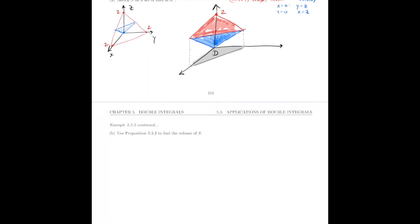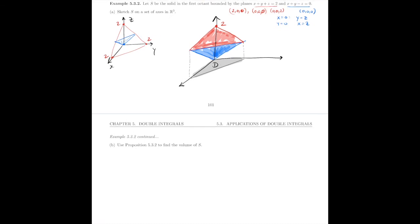Part b says use Proposition 5.3.2 to find the volume of S. To do that, we need to first figure out what this region D is. Let's go back and put some numbers on the region. This is our plane here, the plane in red: x + y + z = 2. If we're looking in the yz-plane, we have x = 0. Our line right there is the line when x = 0: z + y = 2.